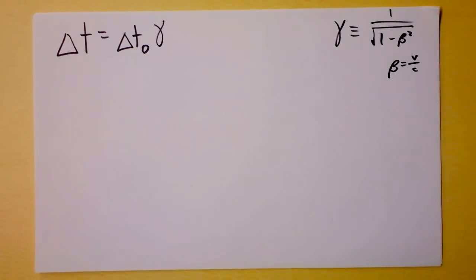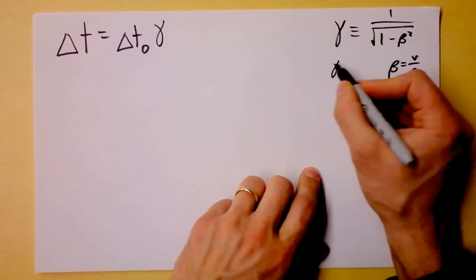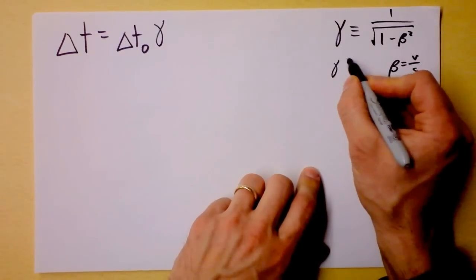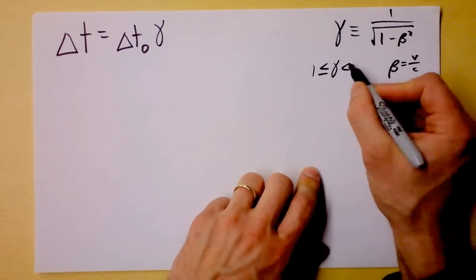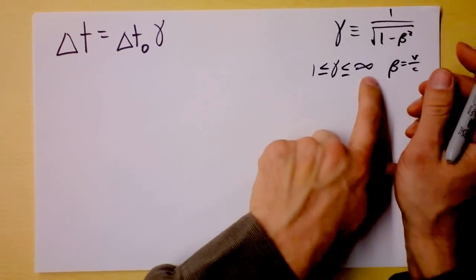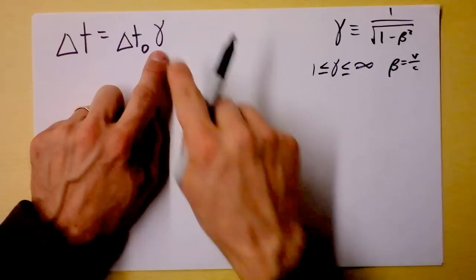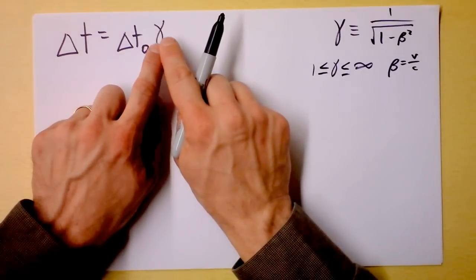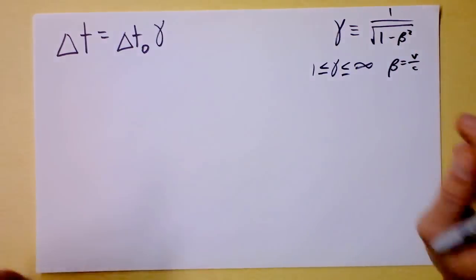So if you get beta really big, really close to 1, gamma gets absolutely enormous. And remember that gamma, the smallest that it can be is 1 and it can be all the way up to infinity. In fact for the speed of light gamma is infinity. Light doesn't experience time. Light literally does not experience any time. The time that the light would experience at rest is absolutely zero.